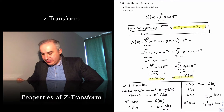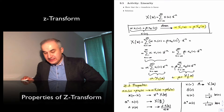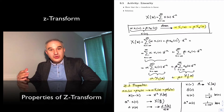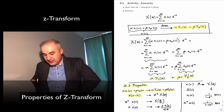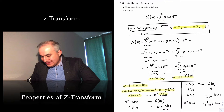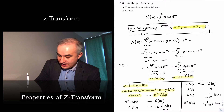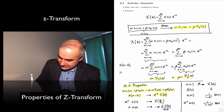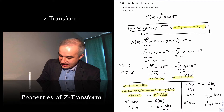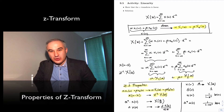In addition to linearity, there are other properties that we use quite a lot. The most used property of the C-transform is that a delay in the time domain gives you the same C-transform multiplied times C to the minus k. For instance, when we do x of n minus 1, the C-transform of this will be C to the minus 1 times X of C. This is why in block diagrams the delay operator appears as C to the minus 1 for each delay.